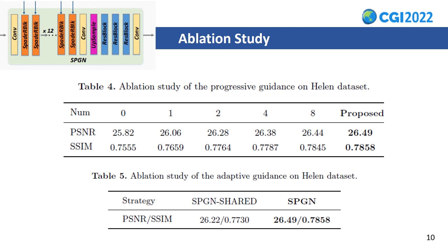We also study the relationship between the number of guidance layers and the efficiency of guidance. As shown in Table 4, PSNR and SSIM gradually improve as the number of guidance layers increases. We further compared the efficiency of static guidance and adaptive guidance. For static guidance, the network uses shared modulation parameters in one SPADE block. As shown in Table 5, adaptive guidance achieves higher super-resolution performance, indicating that the adaptive guidance strategy is more effective.